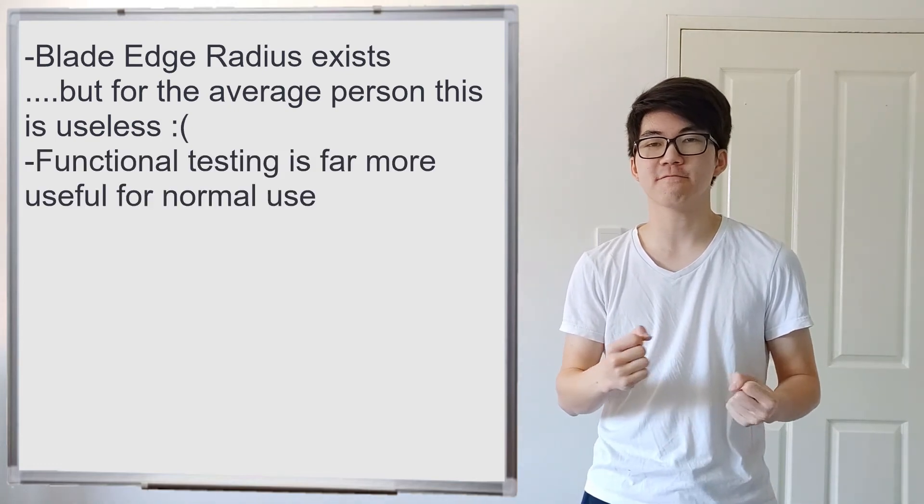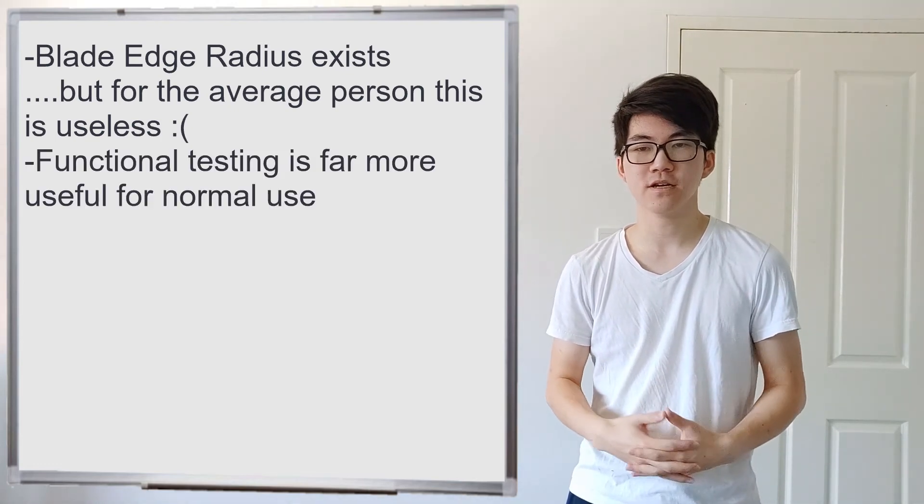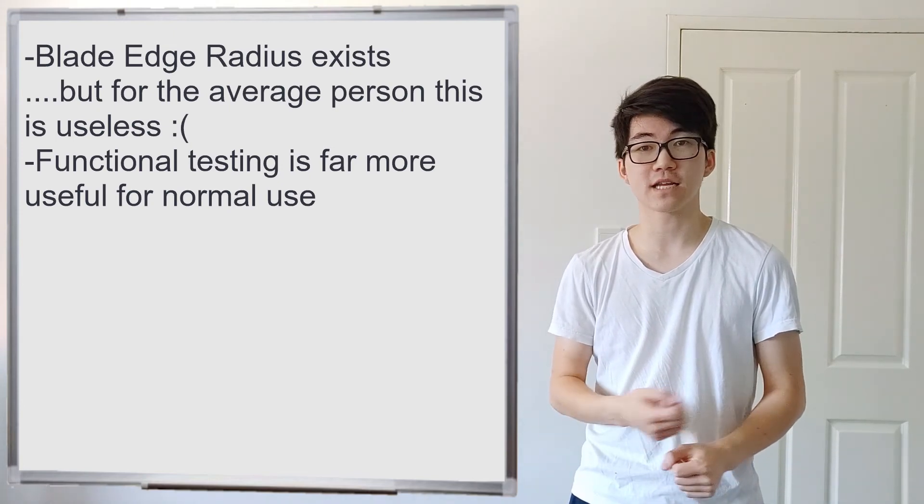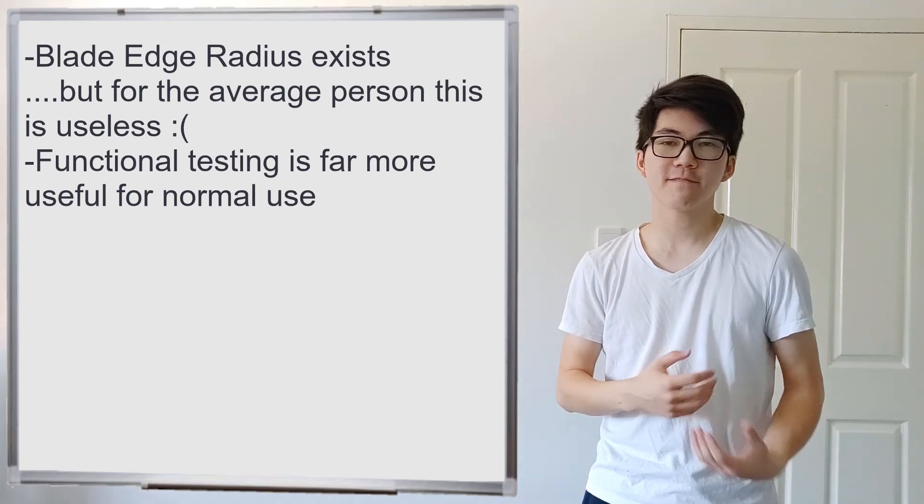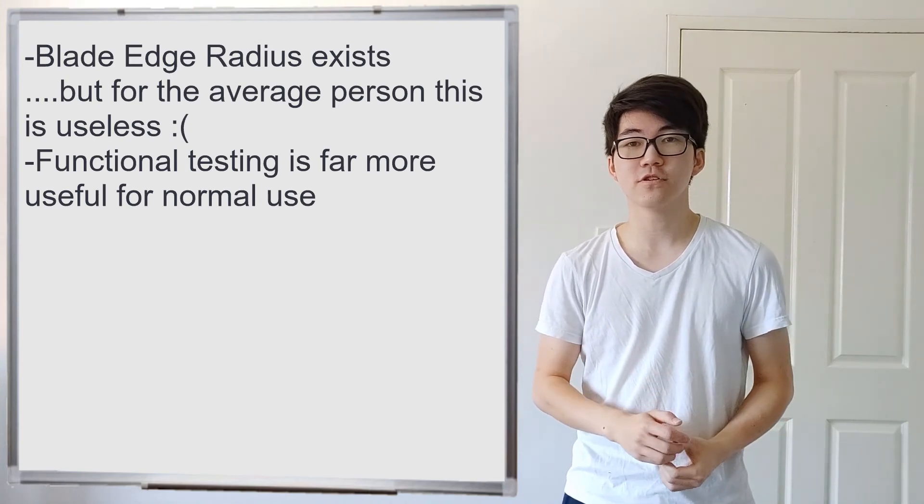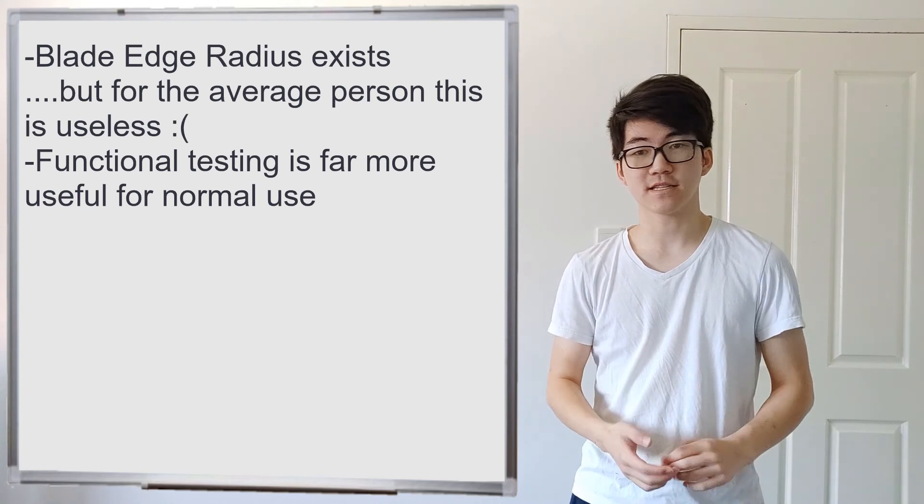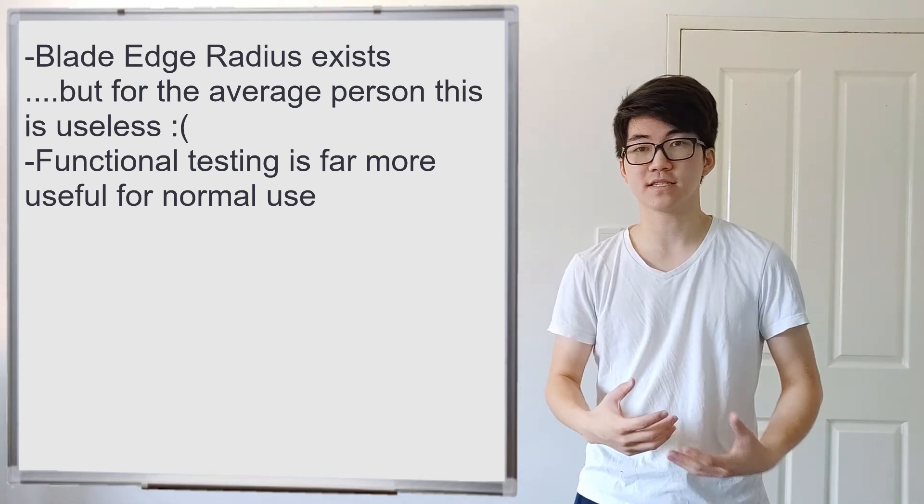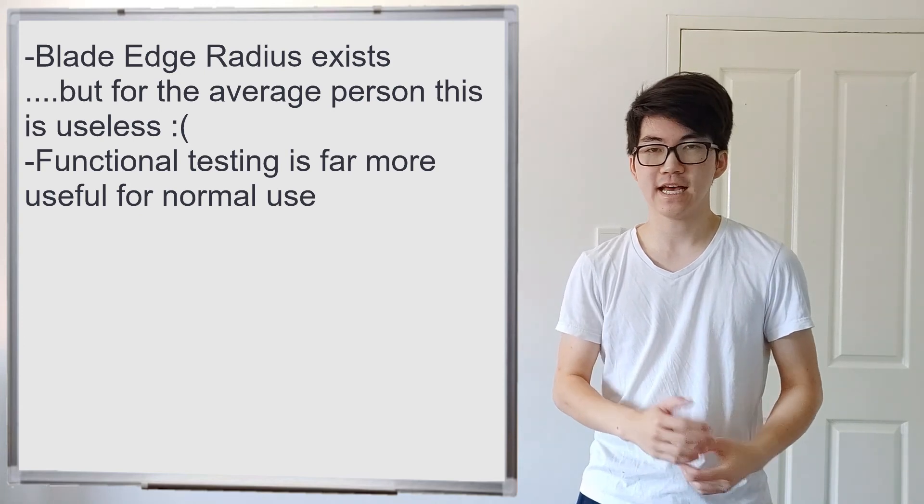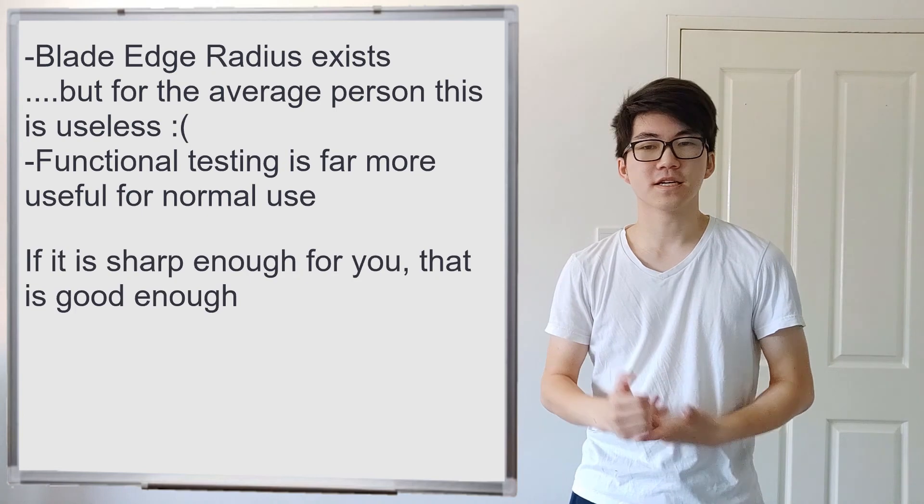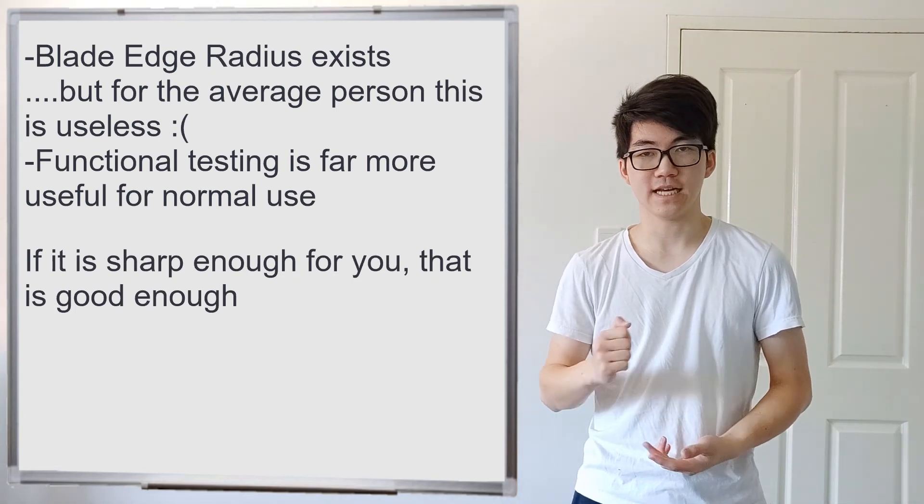And so I think that functional testing is actually the way to go. So if you do functional testing by cutting tomatoes or cutting paper, then good for you. My functional testing is I go and I cut a pool noodle, and if I can cut the pool noodle with some difficulty, but it's still possible to cut it, then that's sharp enough for me. Because I don't want the pool noodle to cut too easily, because then it doesn't train my sword skills. And I don't want the sword to be too blunt, because then I can't cut the pool noodle. So if it's sharp enough for you, then that's good enough.